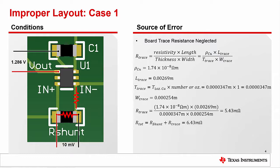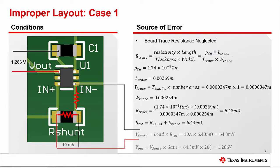In this particular case, we calculate the series trace resistance to be 5.43 milli-ohms, which leads to 64.3 millivolts being measured by the INA 185, thereby making the INA 185 output 1.286 volts.